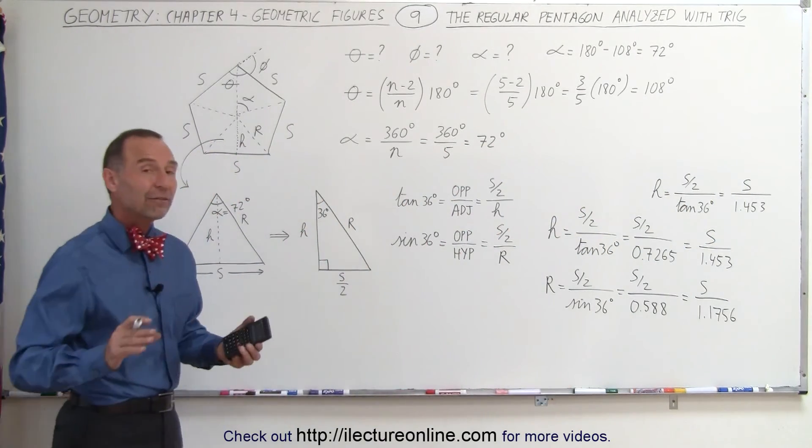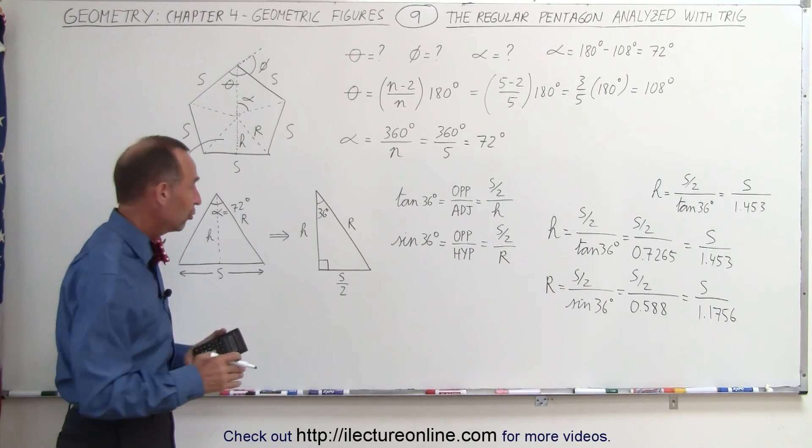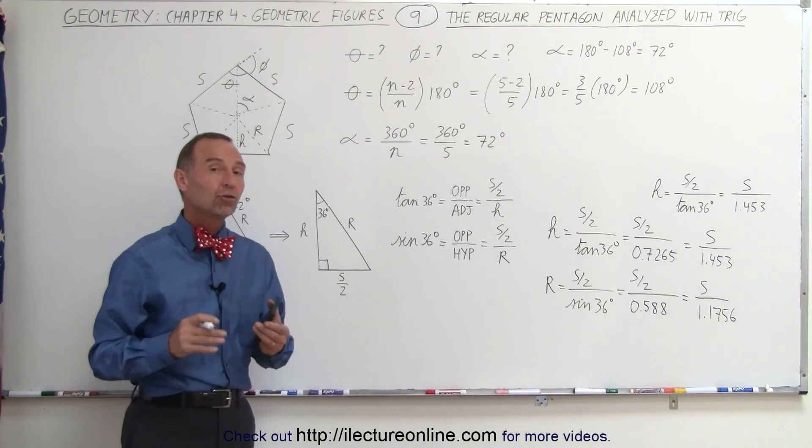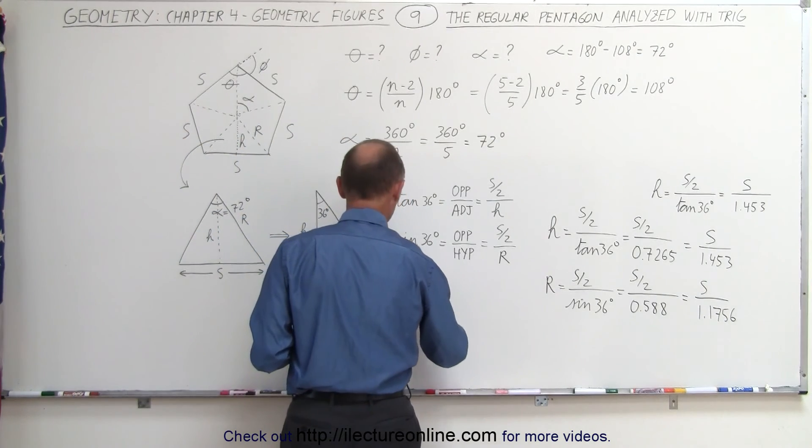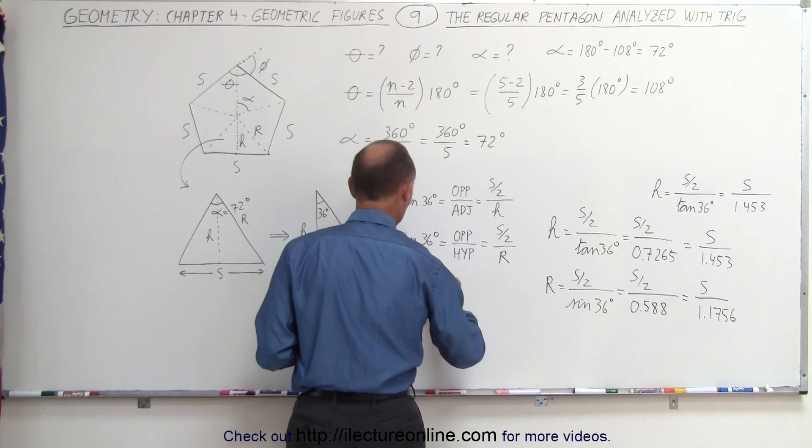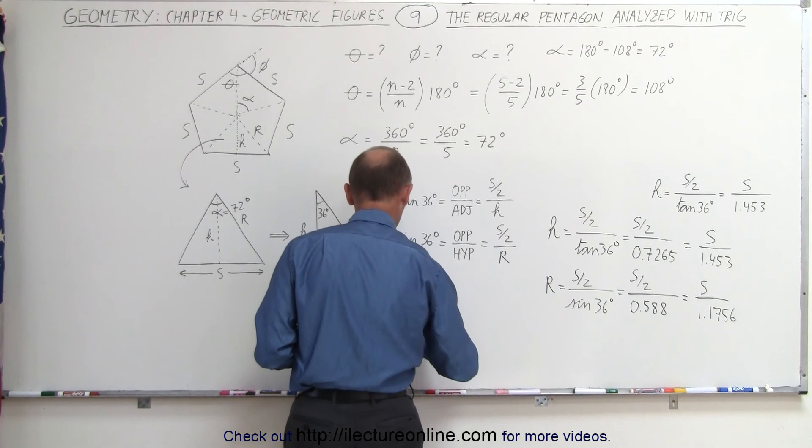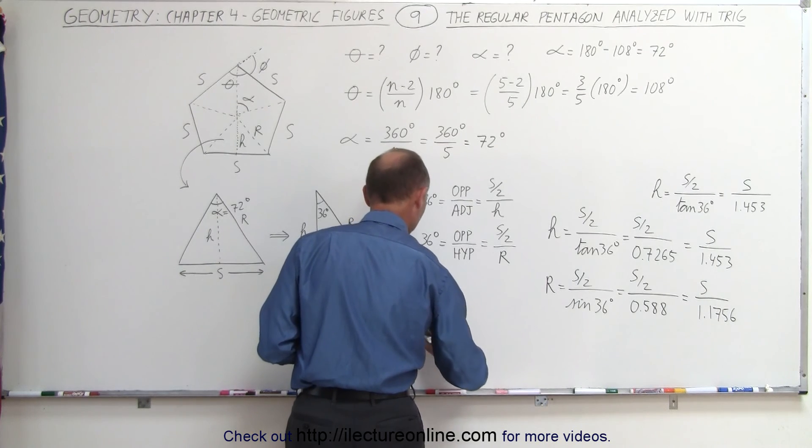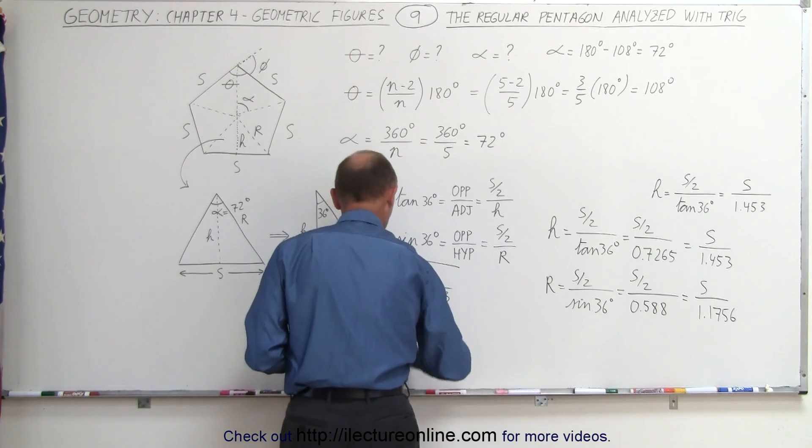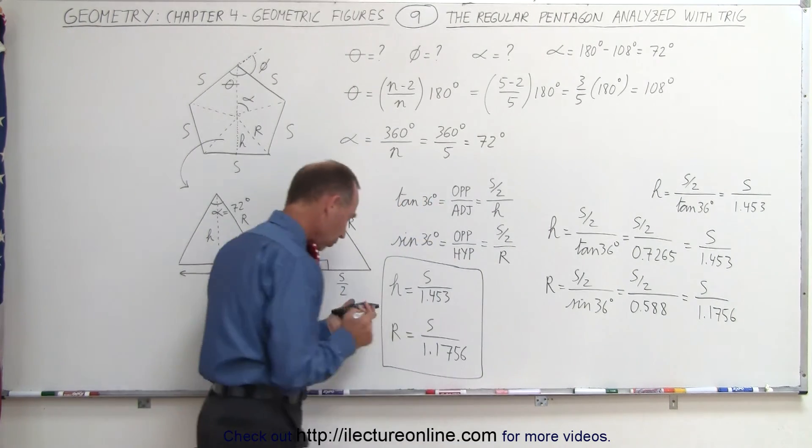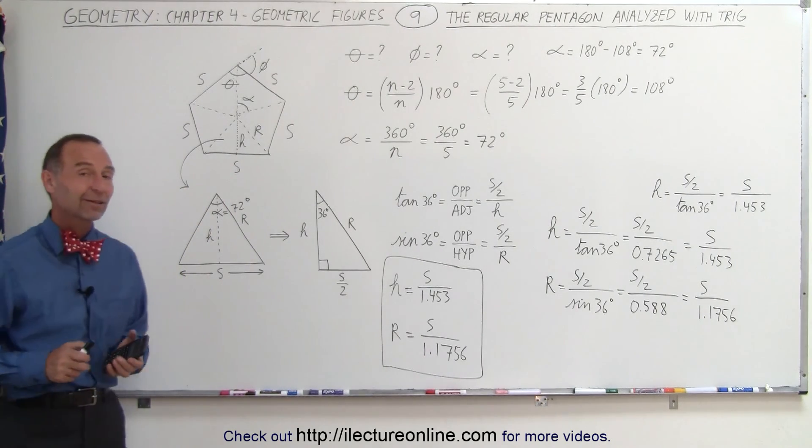So, summarizing, if you're given a regular pentagon, and you want to know h and r, so that you can find the area of each of the five triangles, so that you can find the area of the total pentagon, you can then say that h is equal to the side divided by 1.453, and that r is equal to the side divided by 1.1756. And that's how you find the relationship between the side of the pentagon and h and r. That's how that's done.